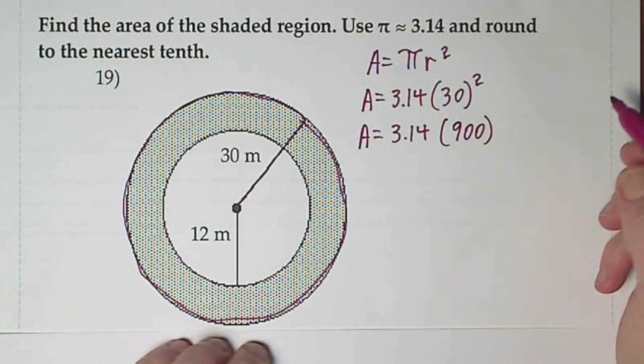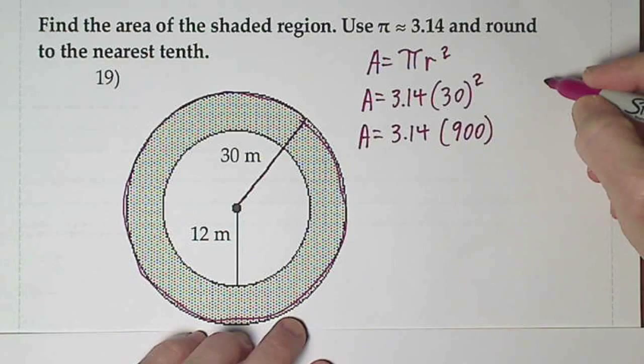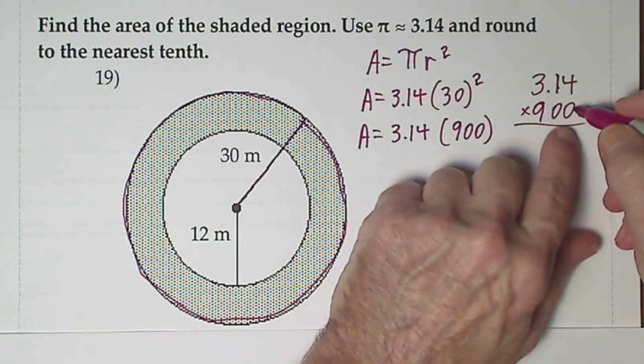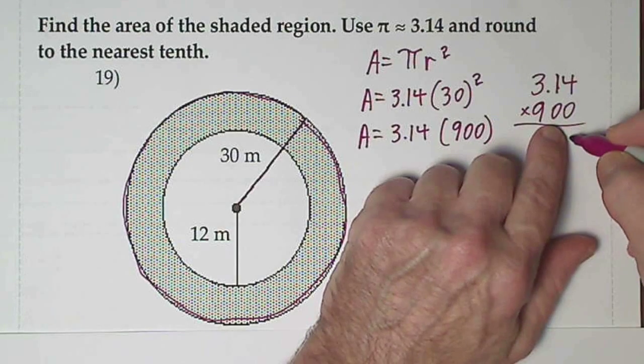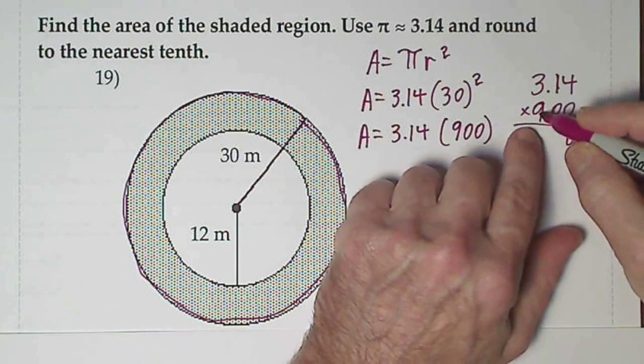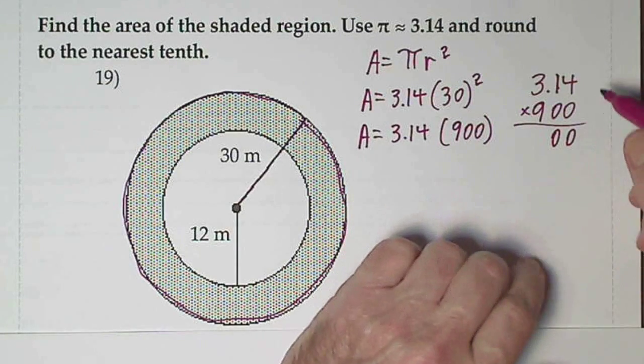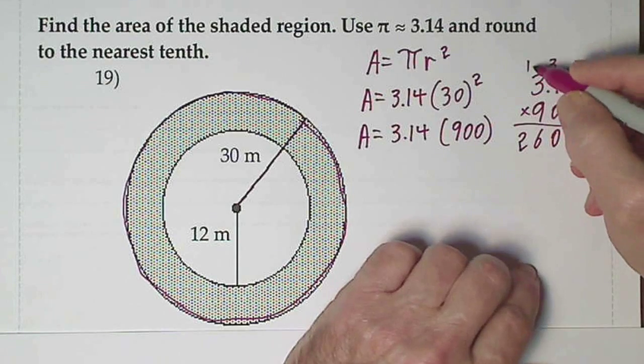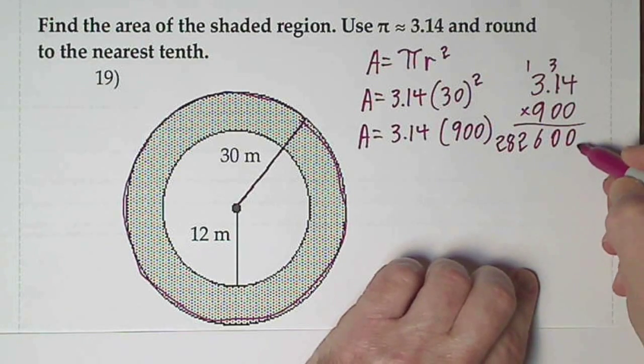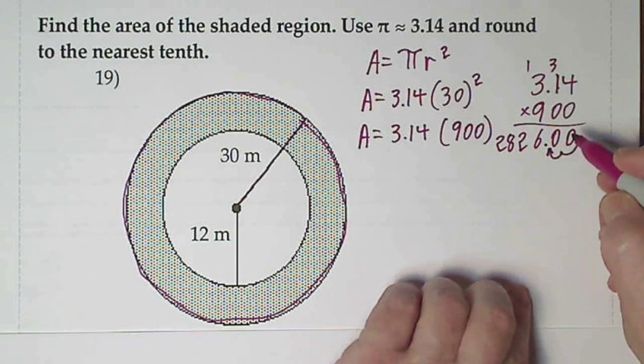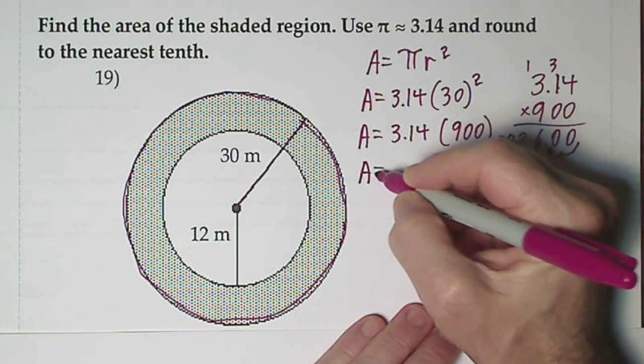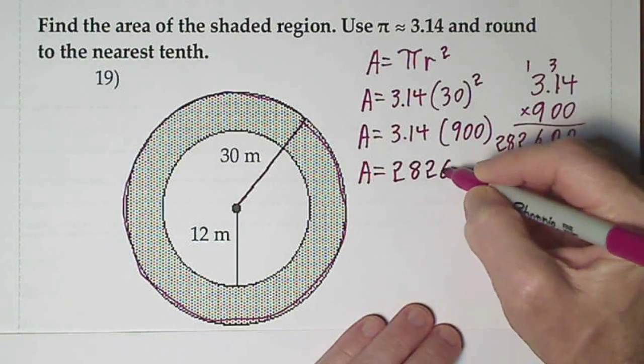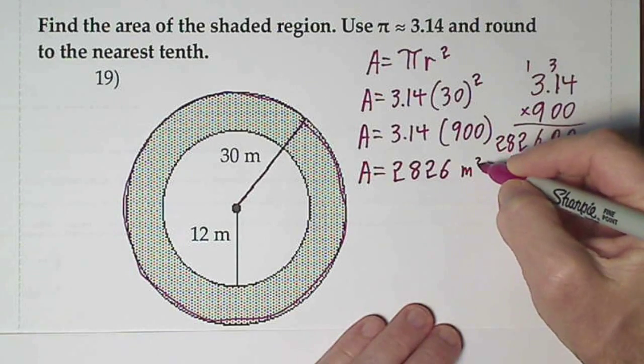And when we multiply that, it's actually not that bad because of all those zeros. So when we multiply by the first zero, nothing happens. Before I even start for my second, I have to put in a zero. When I get all the way over here to the hundreds, I have to have two zeros. And now 9 times 4. 9, 10, 11, 12. And then 27, 28. We have two decimal places. So the area of the large circle is 2,826 square meters.